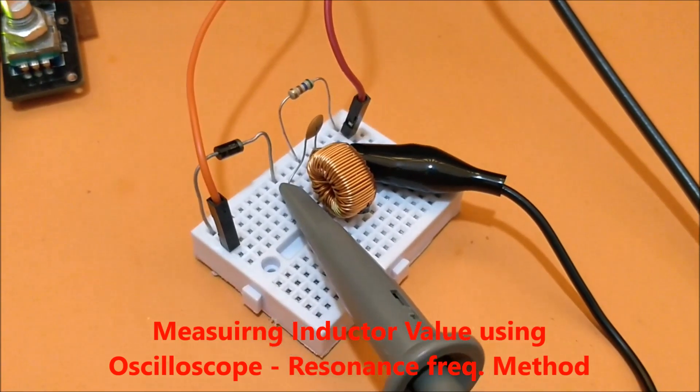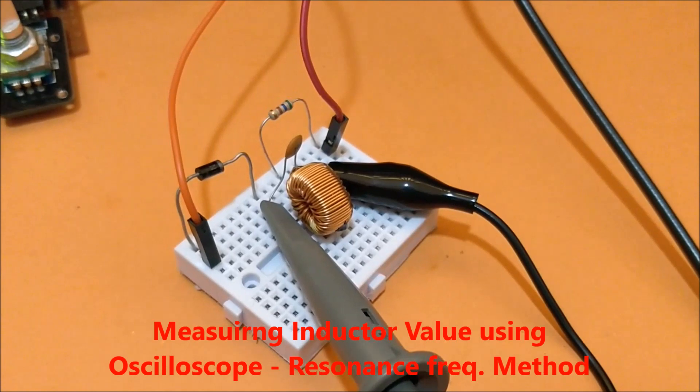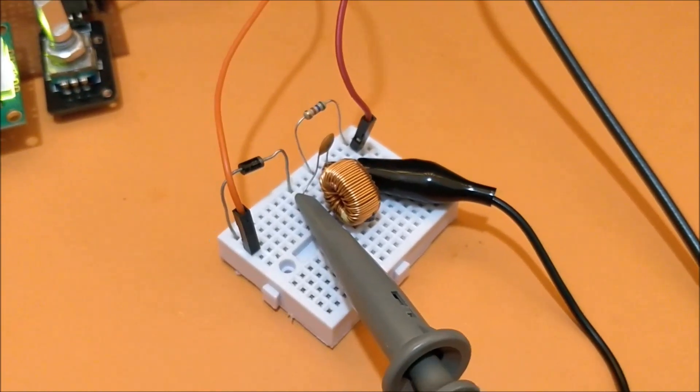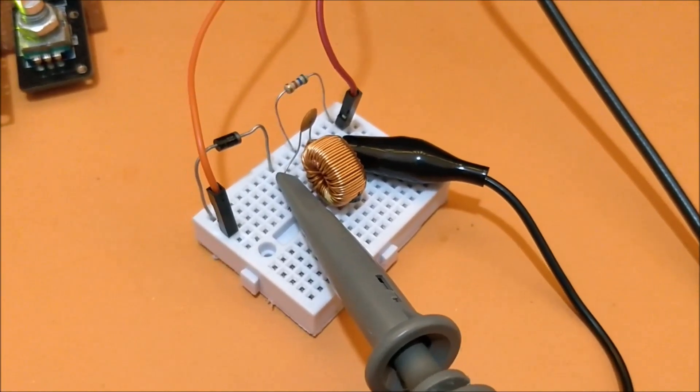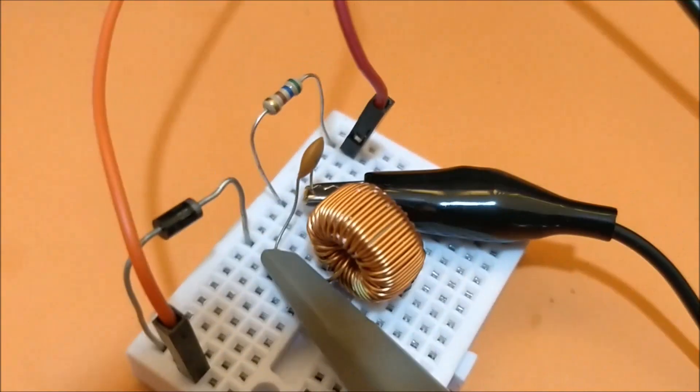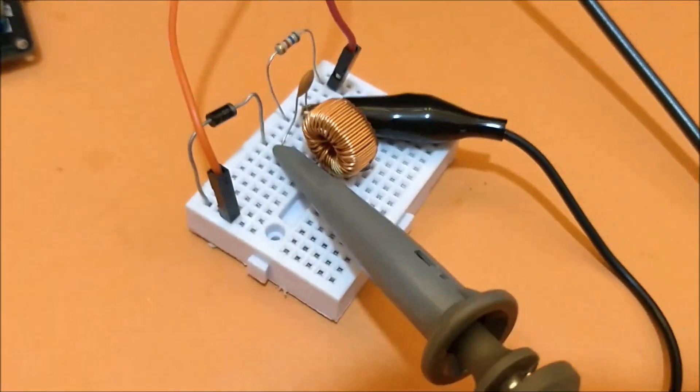Hello all, welcome to another video of Circuit Digest. In this video I'll show you how you can use an oscilloscope to measure the value of an inductor or a capacitor. As you can see, I have a toroid inductor here which is this one, and I'm trying to measure the value of this inductor using my oscilloscope.